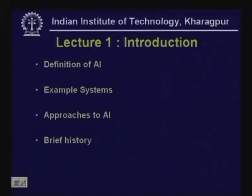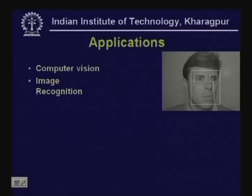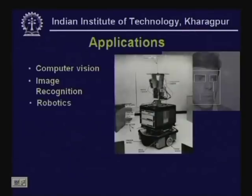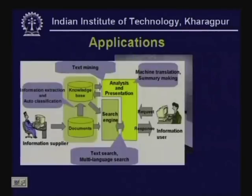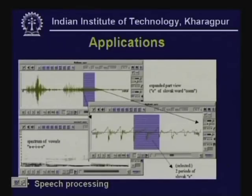Now that we have looked at the definition of AI, let us look at some example AI systems. Some of the applications of AI include: computer vision, image recognition including face recognition, robotics, natural language processing and natural language understanding, speech processing, etc.